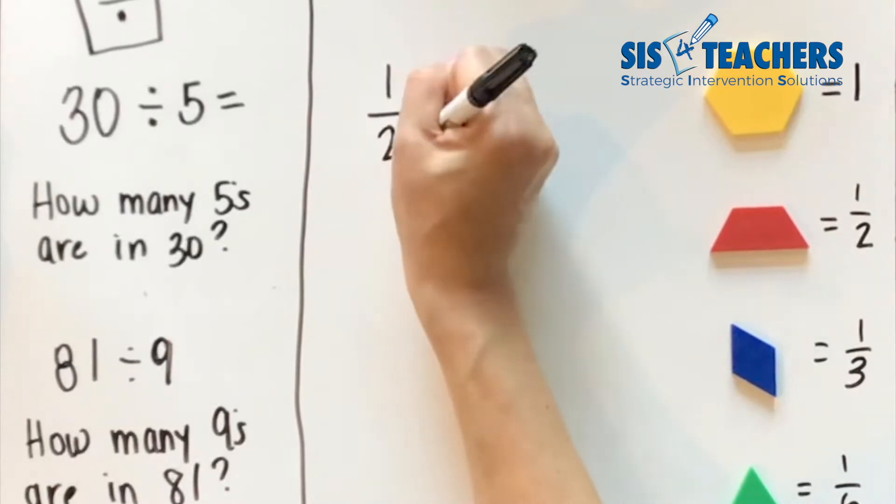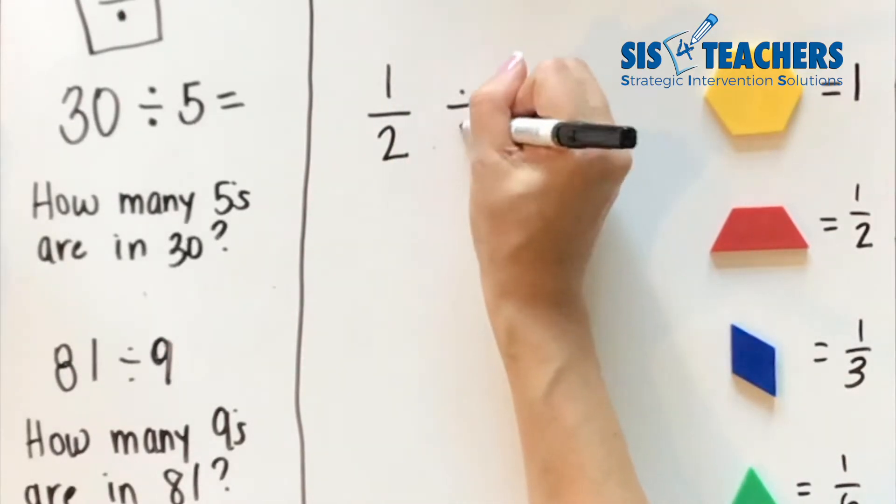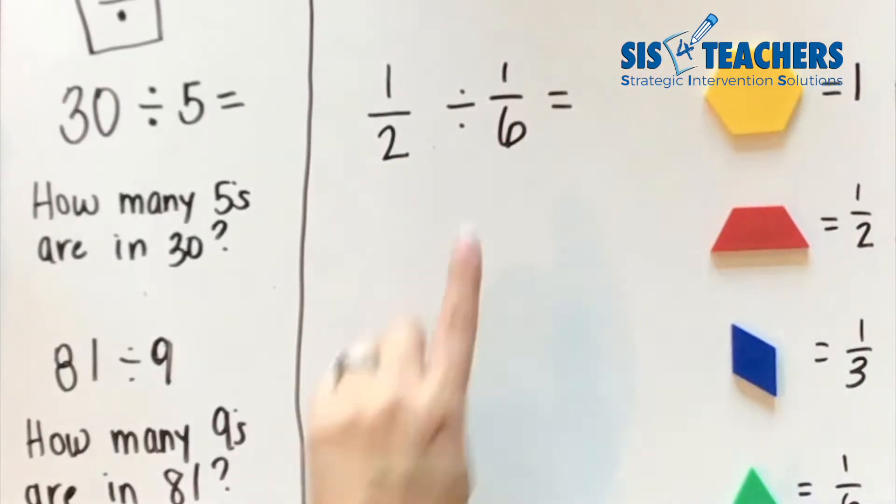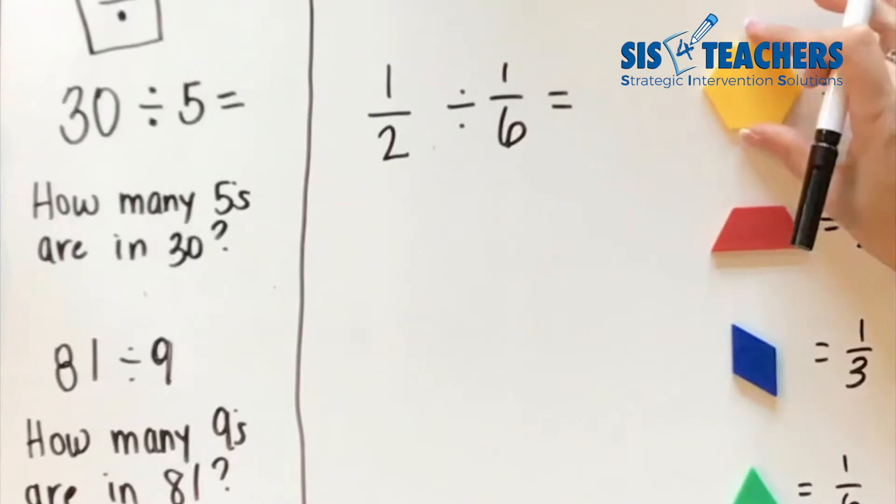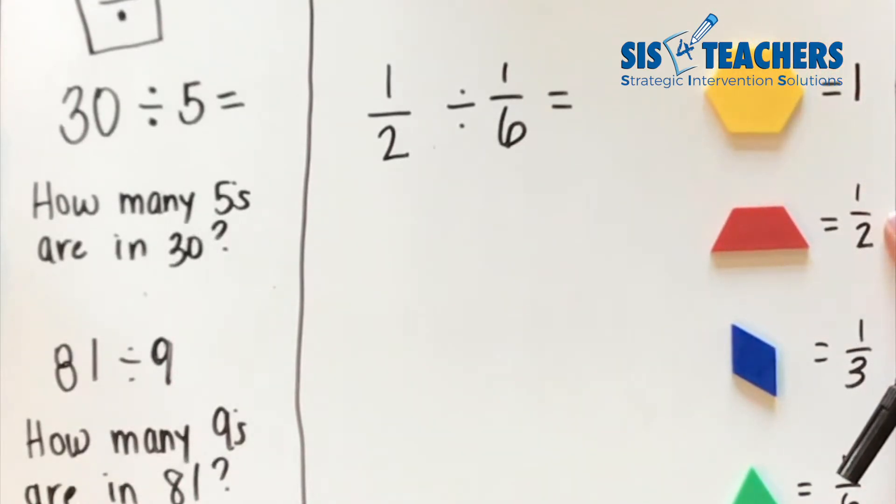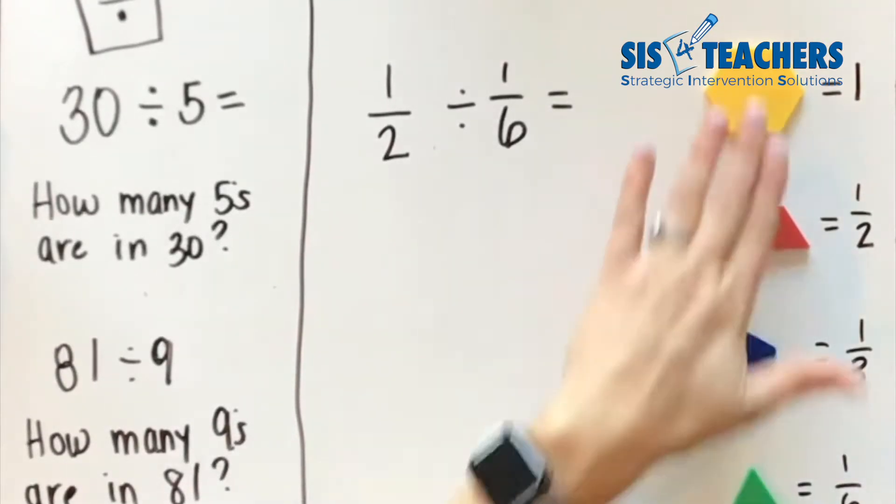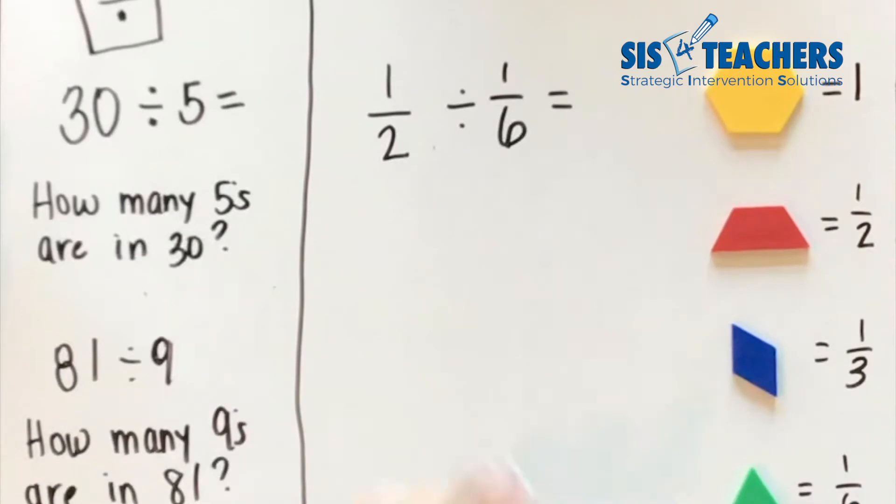So if I look at this problem, 1/2 divided by 1/6, we want to be able to understand what is that asking. It's asking how many sixths are there in 1/2. We're going to use pattern blocks with a hexagon equal to a whole, trapezoid equal to 1/2, rhombus as 1/3, and the triangle equal to 1/6. These are very familiar manipulatives for students to demonstrate what we're doing.